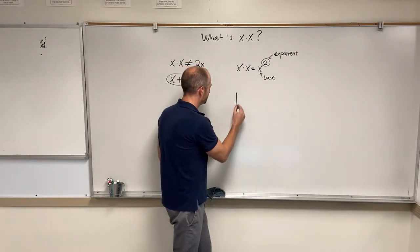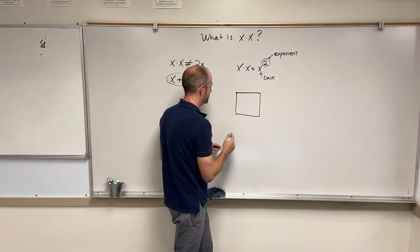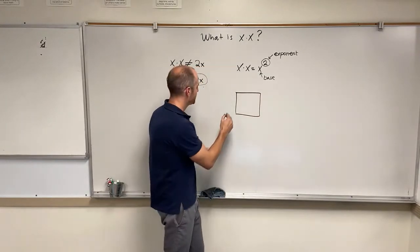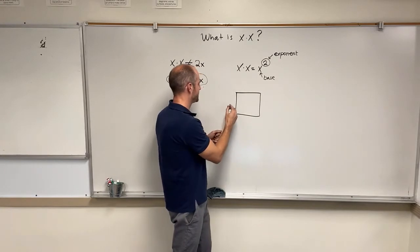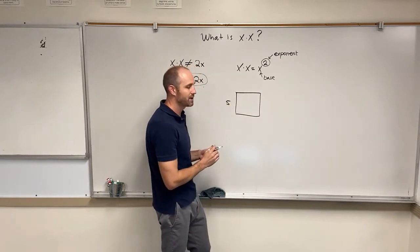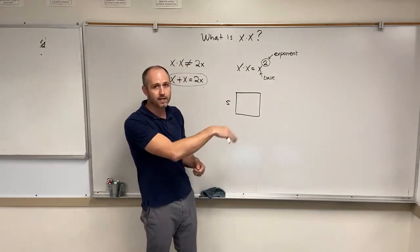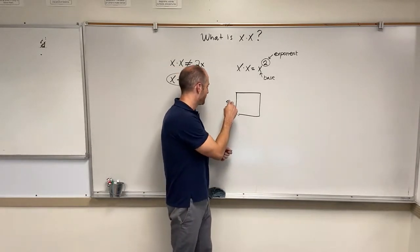Actually, it comes from the area of a square. So if you have a square that has side length 5, for example, a square has all the side lengths the same. So if this side is 5, then this side is 5 too.